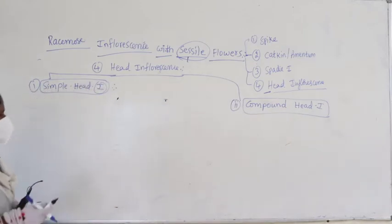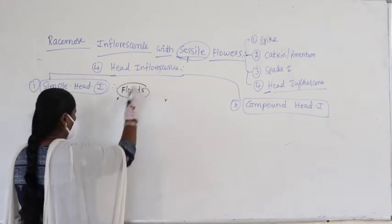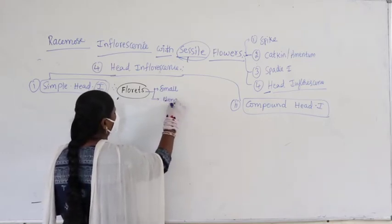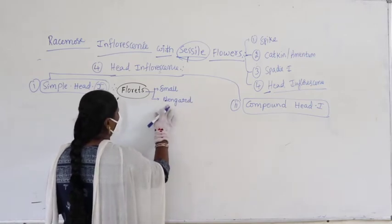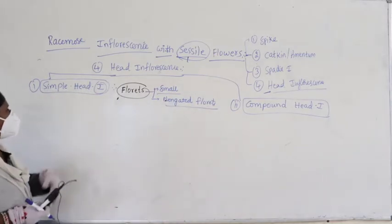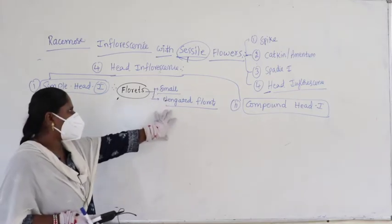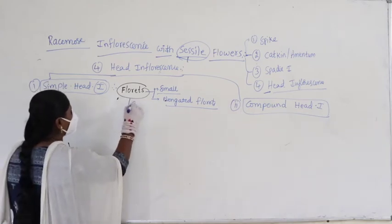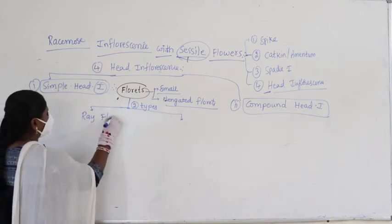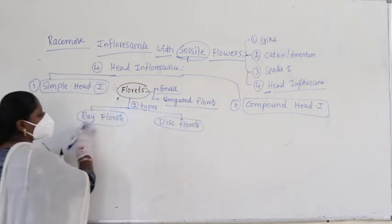Now, listen carefully. In head inflorescence we find what are called florets — small, elongated flowers or small elongated pistils. Generally in head inflorescence, florets are small and elongated. If you observe carefully in some flowers, they exist in two types. Structurally they show variations. The first type is ray florets and the other is disc florets, based upon shape and structure.